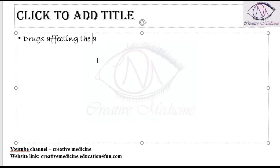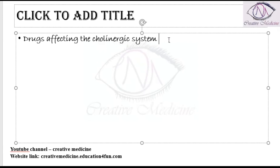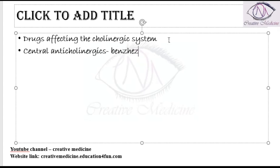We also have drugs which affect the cholinergic system of the brain. In the cholinergic system of the brain we have central anticholinergics. Central anticholinergics include benzexol, biperiden.